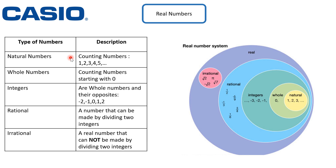Whole numbers are counting numbers starting with zero. Examples of whole numbers are: zero, one, two, three, four, five, six, etc.